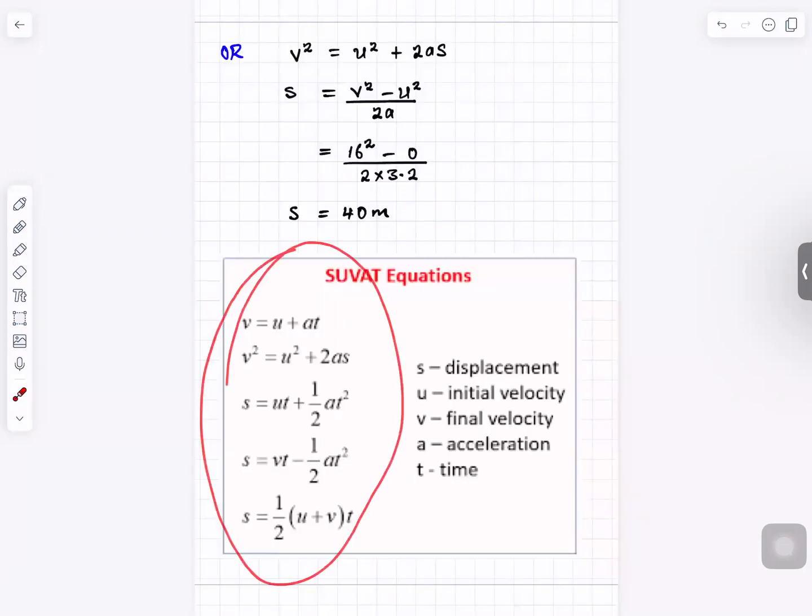These are the SUVAT equations and there are so many other ways you can do it. To get s you can use v squared equals u squared plus 2as to get that 40 meters.